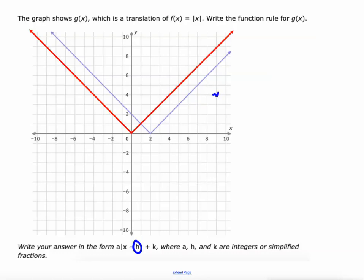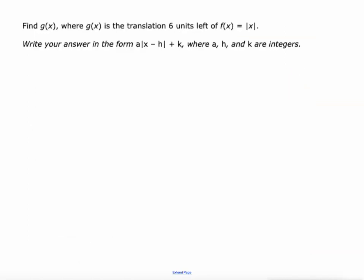Right and left translations are controlled by that h value. g(x) equals, there's no vertical stretch so no a value. We do have this x value minus the fact that it's been translated two to the right. That's it, no worry about up and down. Just one transformation has been done.